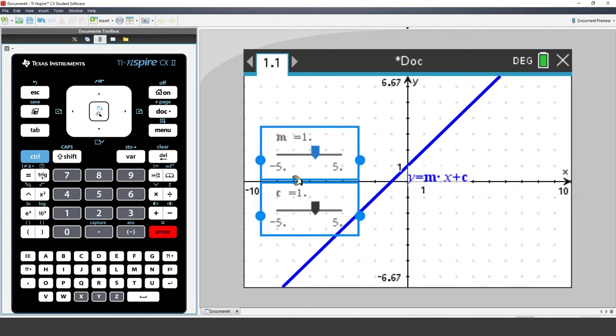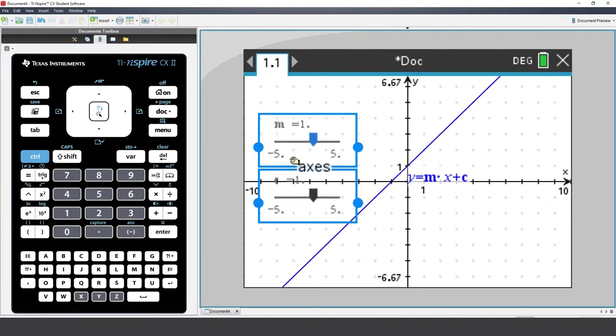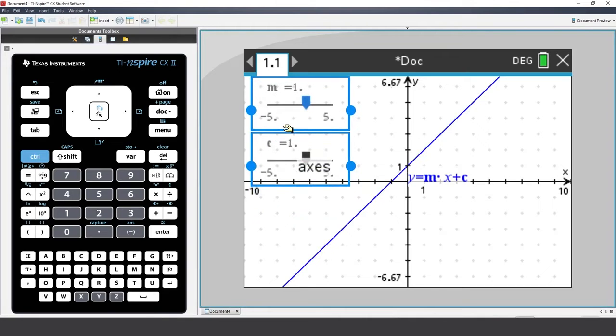The sliders are grouped together and ready to be moved. Use the mouse to move over the sliders and pause when the mouse turns into a hand. Click and hold, and then move the sliders to the top left corner of the screen and click. Then press Escape to release the selection of the two sliders.